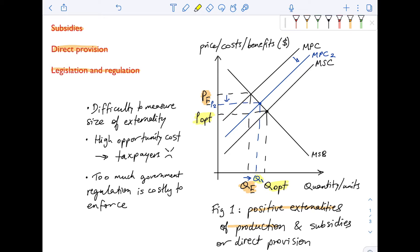The reason I don't put the new MPC curve directly over the MSC is because it's always difficult to measure or estimate the size of the externality and thus it's not always easy to know how much of a subsidy to grant.